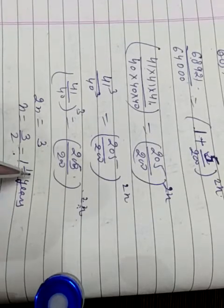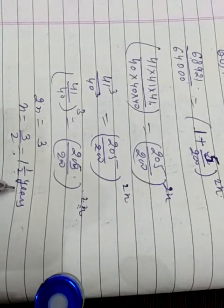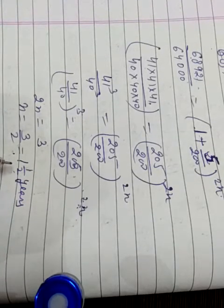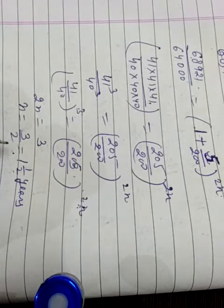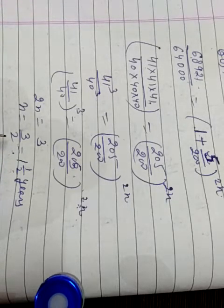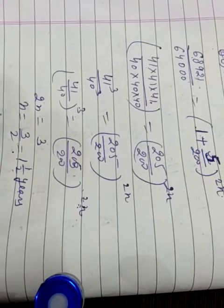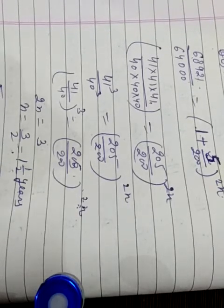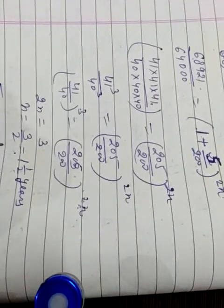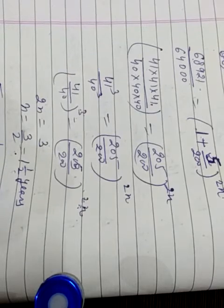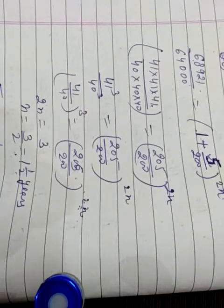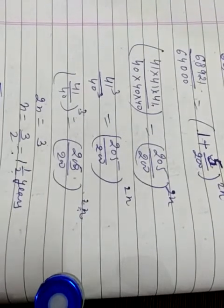2N is equal to 3, so N is equal to 3 upon 2, which means 1 and a half years. In 1 and a half years' time period, rupees 64,000 will amount to 68,921. Time is equal to 1 and a half years.